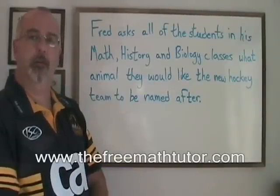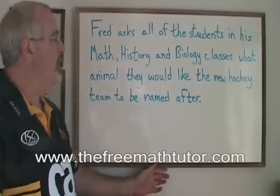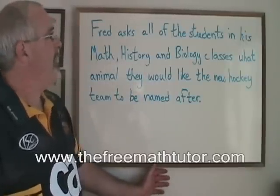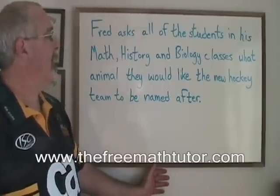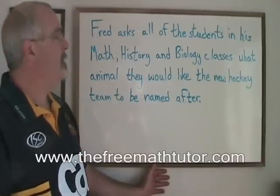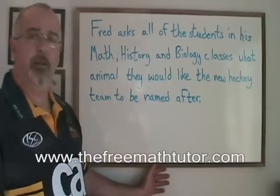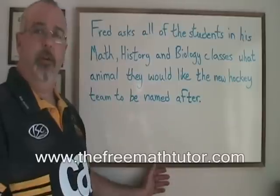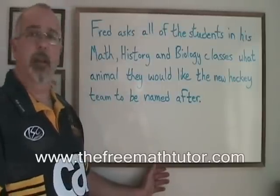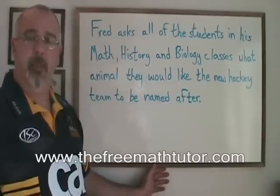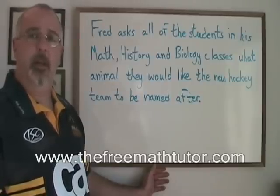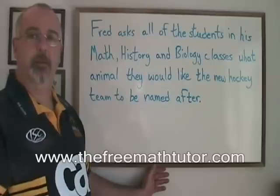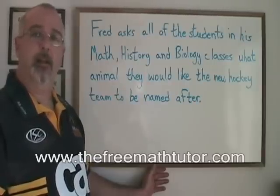One of the students who has been asked to do a survey to find the new name for the ice hockey team is Fred. Fred goes about doing his sample survey by asking all of the students in his math class and in his history and biology classes that morning. What he's doing wrong is he is asking only people who are in the same grade level as him. In a large high school there are several different grade levels, and the wishes of all the people in other grade levels are going to be very much underrepresented in Fred's results. This is a form of data collection error.